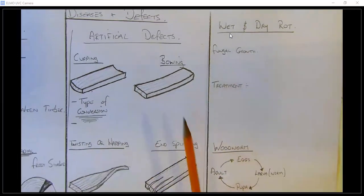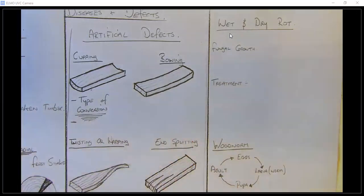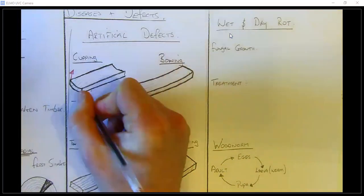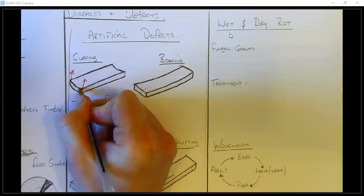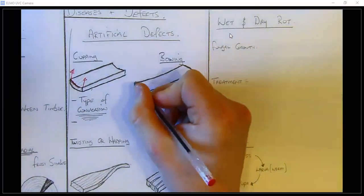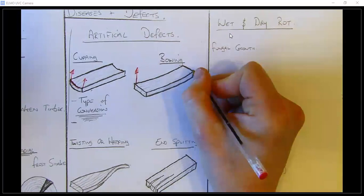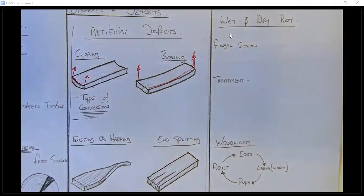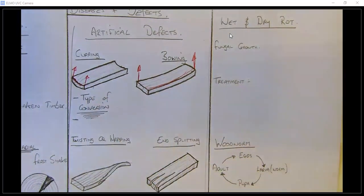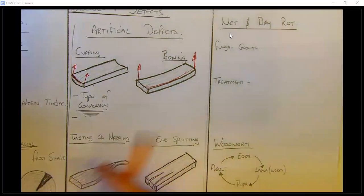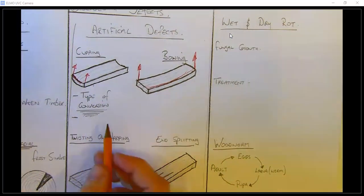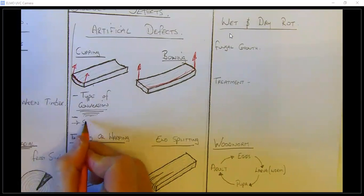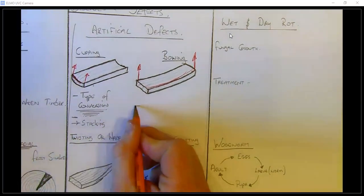The next one is bowing. The two edges are coming up and there's a cup or void in the middle — that's why it's called a cup. With bowing, the ends of the timber are bowing upward and the bow is in the middle of the length of the plank. Both cupping and bowing can result from incorrect stacking of the wood. Bowing is more often than not caused by poor stacking.